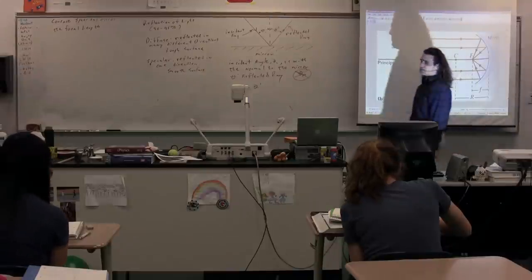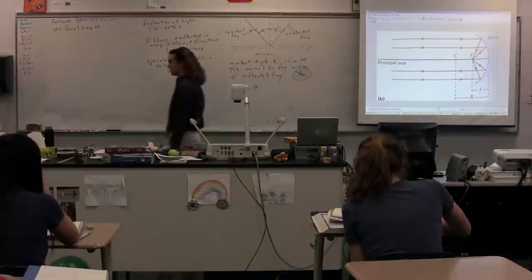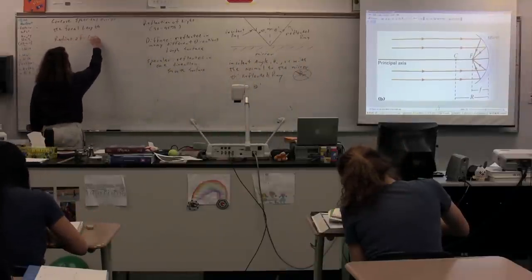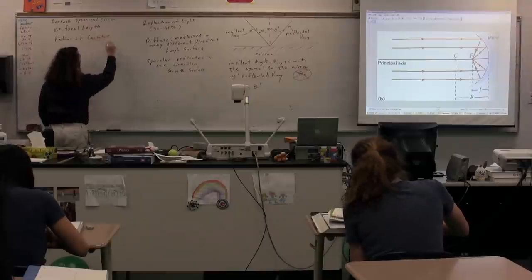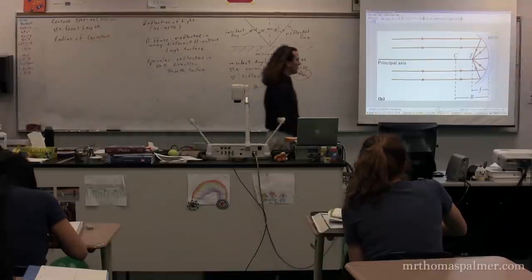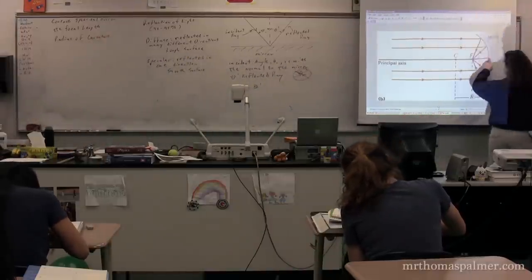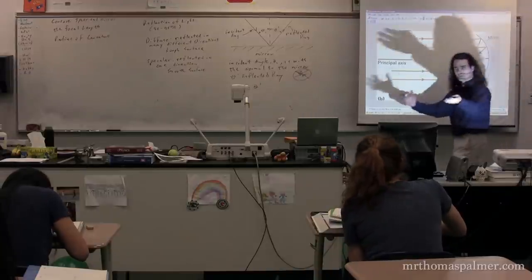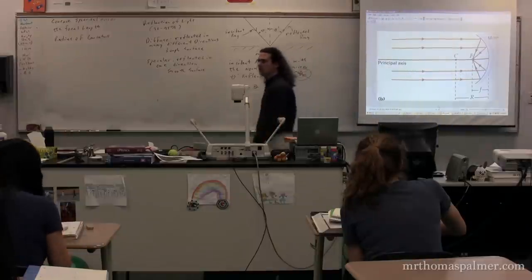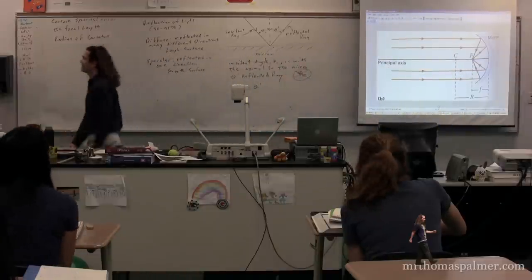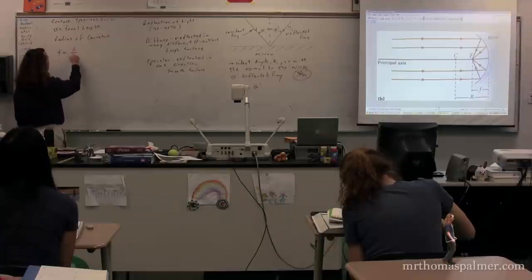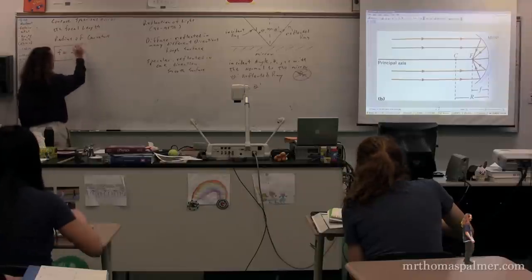We also have the concept of the radius of curvature. The radius of curvature would be the length from the mirror along the principal axis to what is called the center of curvature. So the center of curvature is the specific point. The radius of curvature would be the distance. The focal length and the radius of curvature are related. The radius of curvature divided by 2 is the focal length.